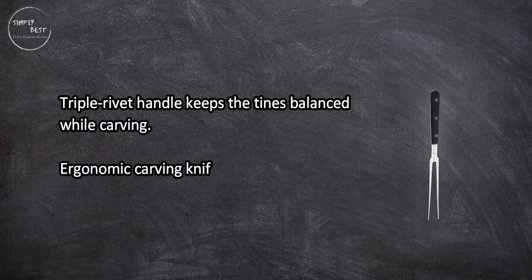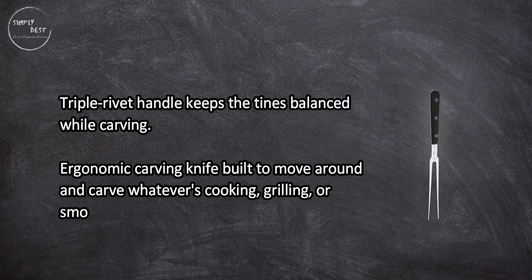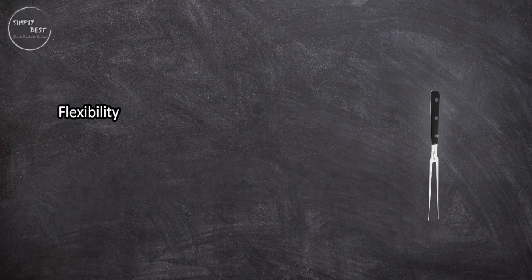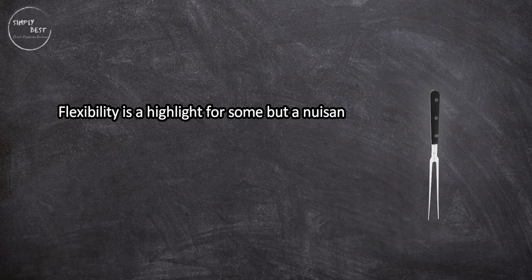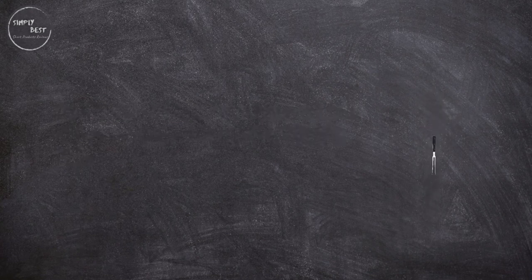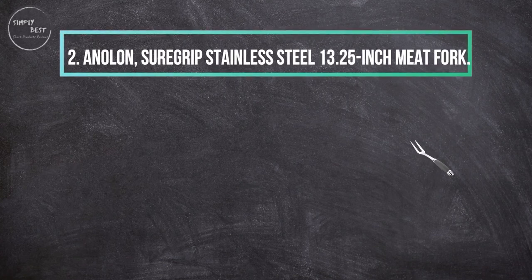Ergonomic carving fork built to move around and carve whatever's cooking, grilling, or smoking. Flexibility is a highlight for some but a nuisance for those who want something that keeps its form. At number two: Analon Sure Grip Stainless Steel